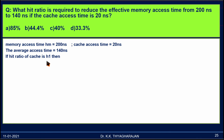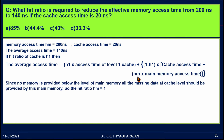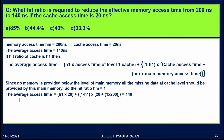If you assume the hit ratio of cache is H1, we use the same formula. Since there is no memory provided below the level of main memory, all missing data at cache level should be provided by main memory, so the value of Hm is 1. Substituting into the formula: average access time equals H1 into 20, plus (1 minus H1) into 20, plus Hm (which is 1) into 200. This should equal 140.